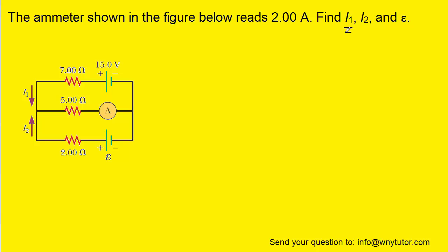It turns out that we can first calculate I1 by applying Kirchhoff's loop rule to the upper loop. But before we do that, let's just remind ourselves of what Kirchhoff's loop rule is.